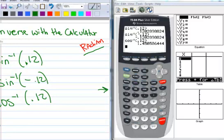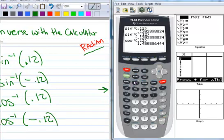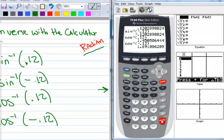And we'll do another one. Negative. Inverse cosine of negative 0.12. Second cosine. Negative 0.12. And we get 1.69. Good. Remember, because that's over in quadrant two.